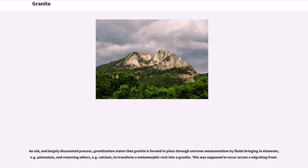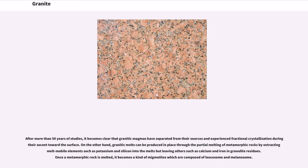An old, and largely discounted process, granitization states that granite is formed in place through extreme metasomatism by fluid bringing in elements, for example potassium, and removing others, for example calcium, to transform a metamorphic rock into a granite. This was supposed to occur across a migrating front. After more than 50 years of studies, it becomes clear that granitic magmas have separated from their sources and experienced fractional crystallization during their ascent toward the surface. On the other hand, granitic melts can be produced and emplaced through the partial melting of metamorphic rocks by extracting melt-mobile elements such as potassium and silicon into the melts, but leaving others such as calcium and iron in granulite residues.